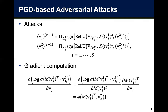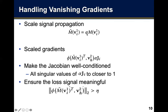We propose a scaled attack signal loss. We add a scaling factor alpha to the network alignment function and then calculate the scaled gradient. Based on theoretical analysis, we need to make the Jacobian well-conditioned, meaning the singular values of alpha-Ji should be close to one, and the norm of phi should be larger than a given threshold. Based on these two conditions, we theoretically derive the upper bound of a feasible alpha, which is then used to scale the signal propagation to produce effective adversarial attacks.